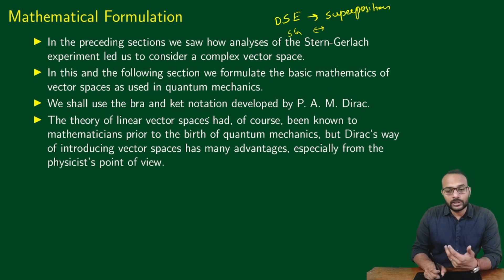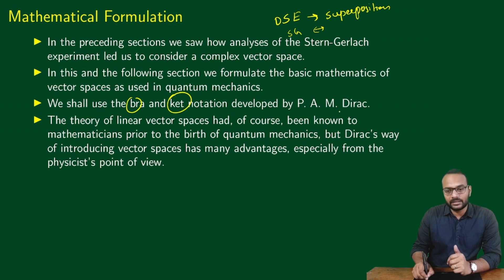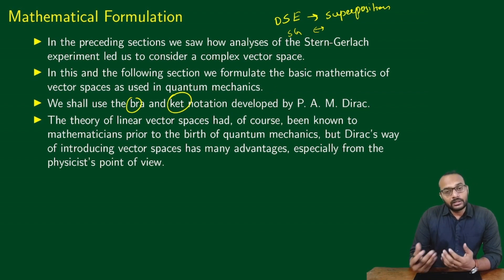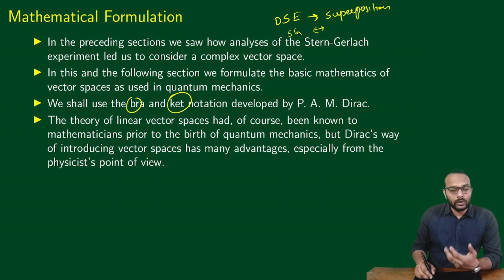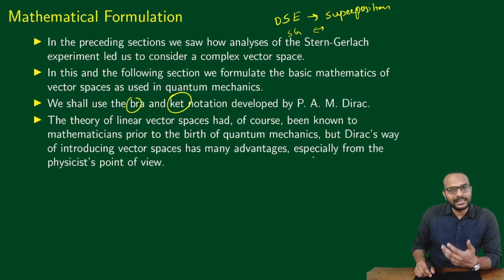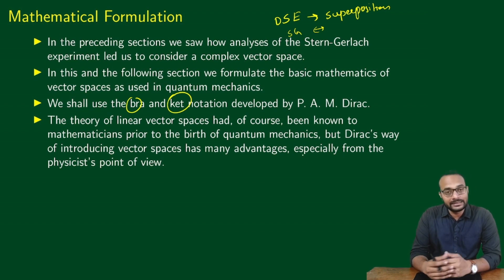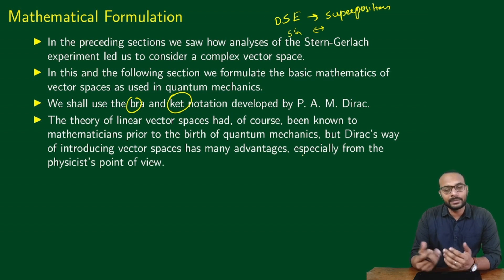Now, a word on the notation that we will be using: it is called the Bra and Ket notation, and this was developed by Dirac. The theory of linear vector spaces, or complex vector spaces, had been known to mathematicians even before the advent of quantum mechanics. But Dirac's way of formulating has many advantages, especially from the physicist's point of view. That is the reason why we will be explicitly following the Dirac notation.